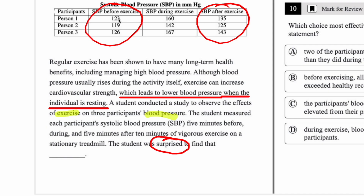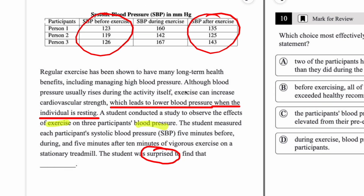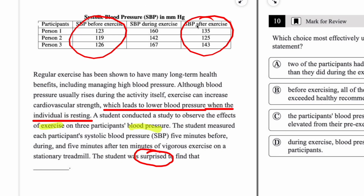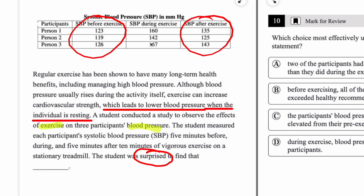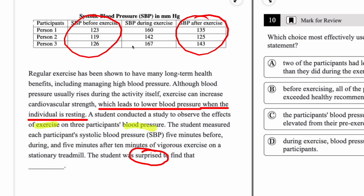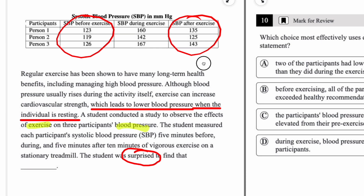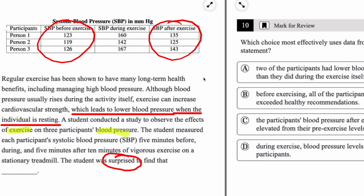Looking at person one, blood pressure goes from 123 to 135 — that's an increase. Person two, also an increase. Person three, also an increase. So all three of them show an increase after exercise relative to before exercise. It could have been just one or two of them, and we would look for an answer choice that reflected that. But here, since all three have higher blood pressure after exercise, we want our answer choice to reflect that.